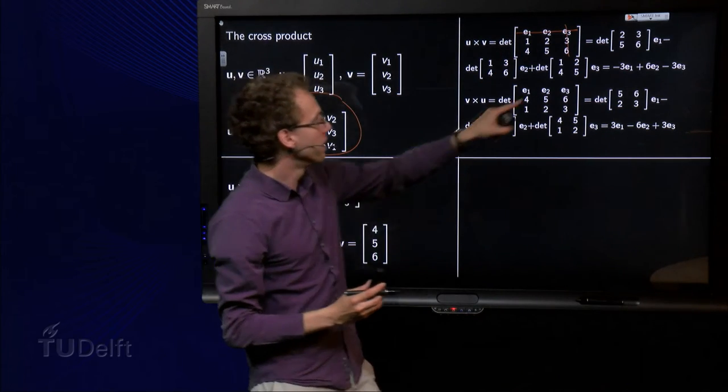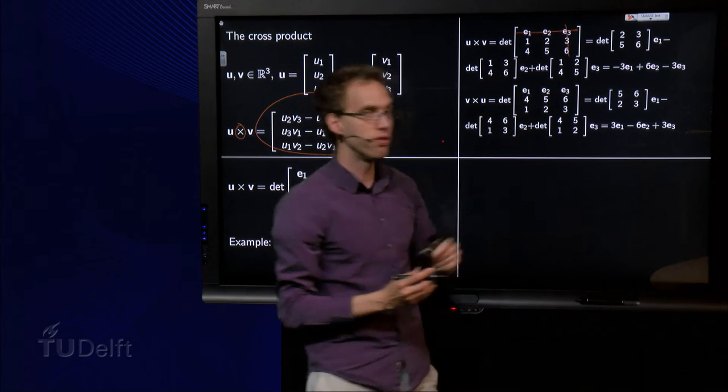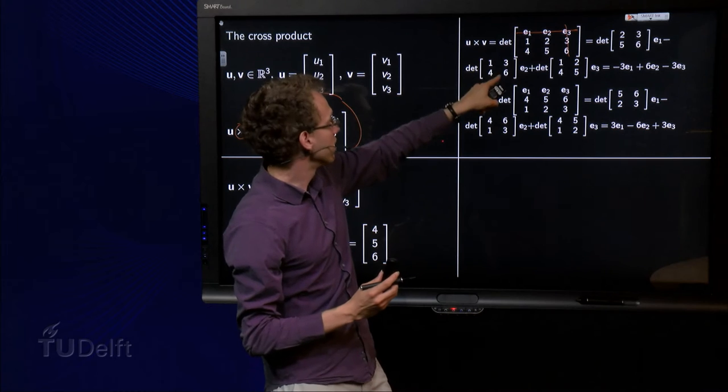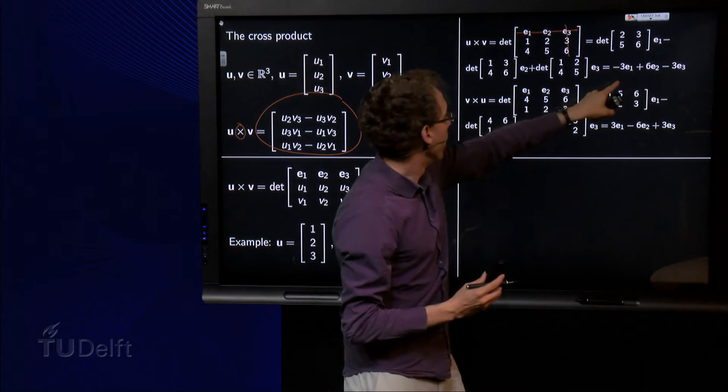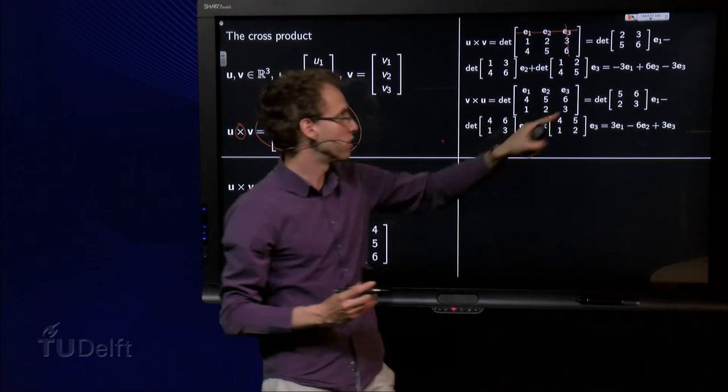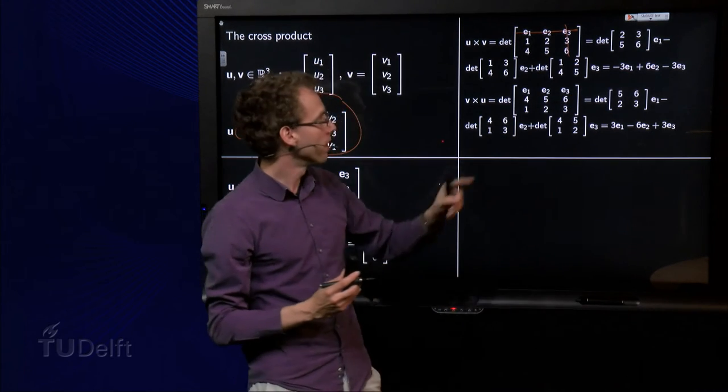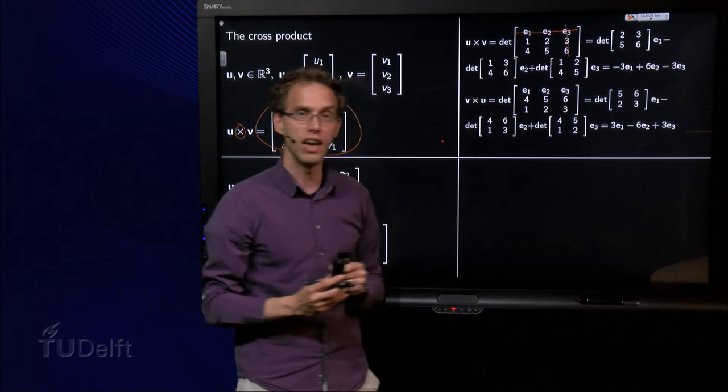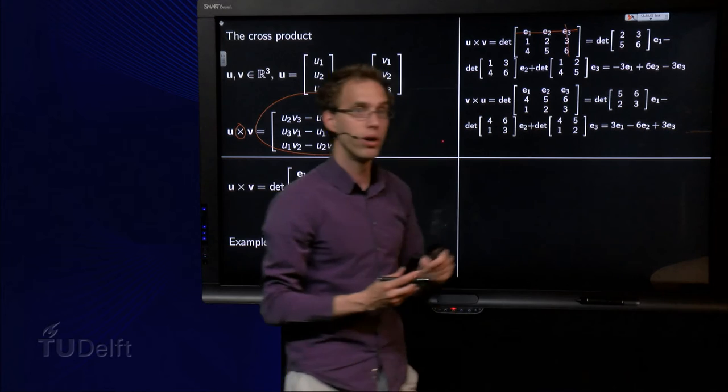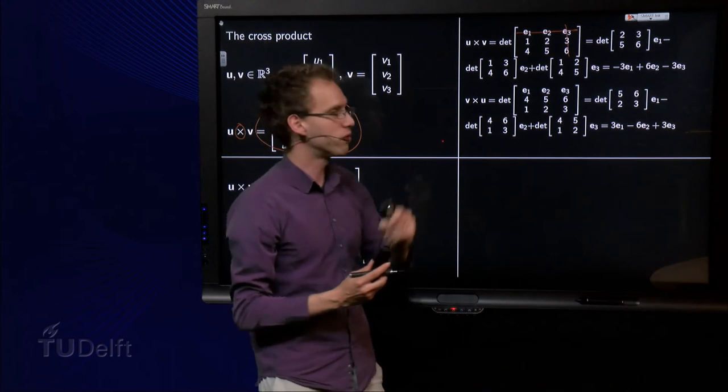Now what do we get? Here we get 12 minus 15 equals minus 3 times e1. Here we get 6 minus 12 with the additional minus sign, so plus 6 times e2, and then finally 5 minus 8 equals minus 3 times e3. There we have our cross product, u cross v.